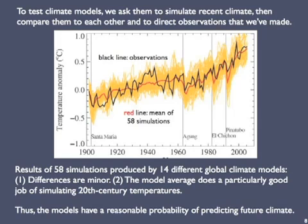Here's an example of how global climate models are tested prior to their use in projecting future climate. A viable model should be able to simulate the climate of the recent past, so we find a bunch of GCMs produced by different research groups around the globe. We feed each model with the appropriate starting values and see if the models can simulate what actually happened in the 20th century. This diagram shows 20th century temperatures as calculated by 58 simulations produced by 14 different GCMs. The 58 results are shown as a mass of superimposed yellow curves. The average of those 58 is the red line.